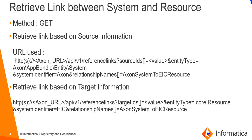Let us take a look at the details of the REST API query. The method used in the REST API query is GET. If you have the source information and want to retrieve the link details, we have to use the URL mentioned in point 2. We will discuss the REST API URL and the parameters passed in detail when we look at the Postman client. First, let us go to the Axon instance and see the link between the Axon system and EDC resources. Further, we will create two separate REST API requests — one using the system information and the other using the resource information.